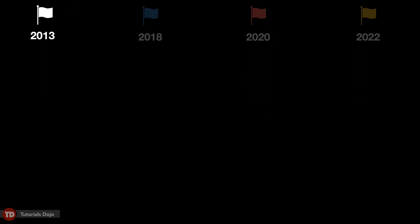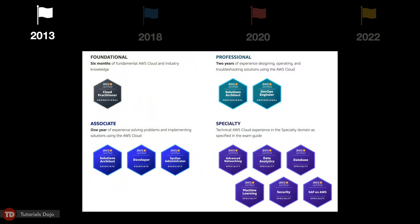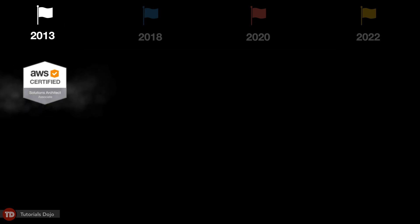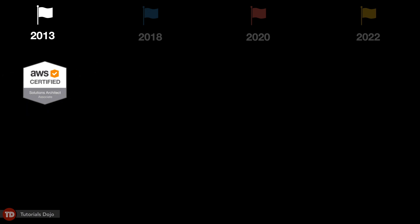In 2013, Amazon Web Services began its global certification program with the primary purpose of validating the technical skills and knowledge of IT professionals for building secure and reliable cloud-based applications using the AWS platform. The AWS Certified Solutions Architect Associate exam was the first AWS certification released that year, followed by two other role-based certification exams: SysOps Administrator and Developer Associate.